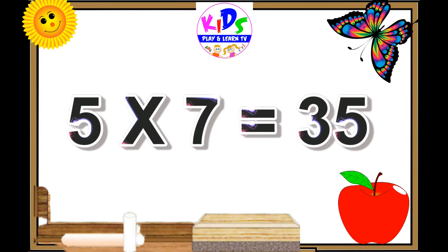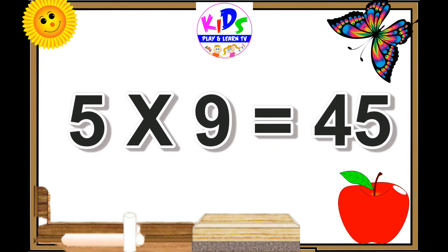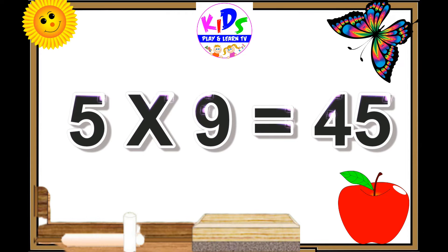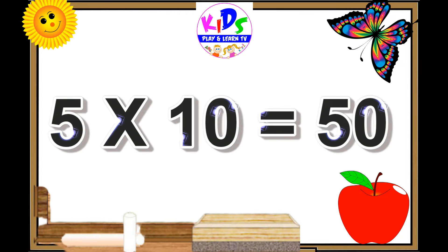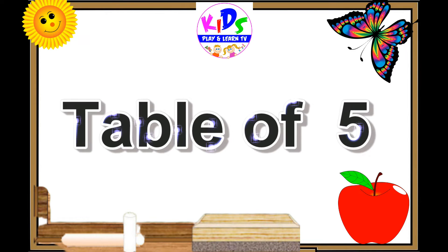Five sevens are thirty-five. Five eights are forty. Five nines are forty-five. Five tens are fifty.